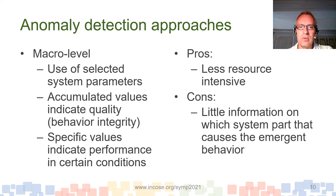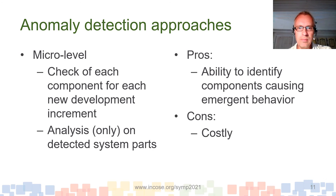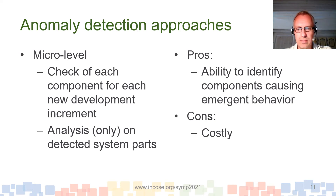The pros of the macro level approach compared to micro level is that it is less resource intensive. The con is that we get little information on which system part causes the emergent behavior. For the micro level, we check each component for each new development increment, but only do analysis on the detected system parts that are relevant for finding emergent behaviors. The pro is it gives us the ability to identify the components causing the behavior; the con is that it is more costly than the macro level approach.